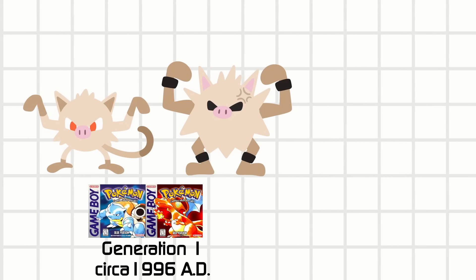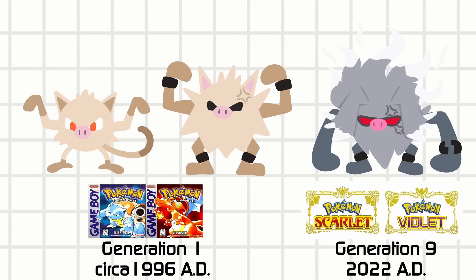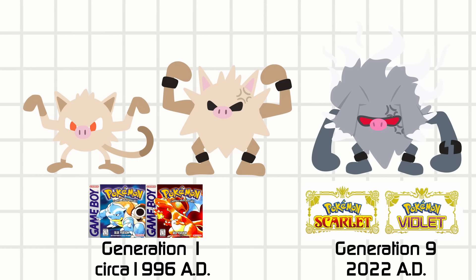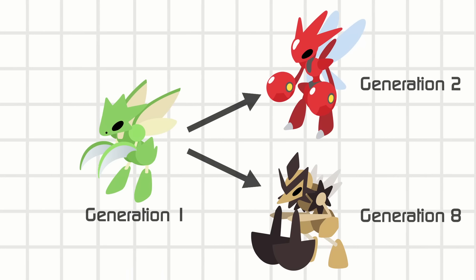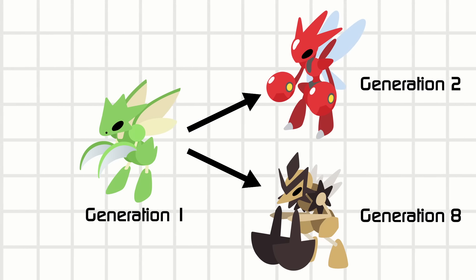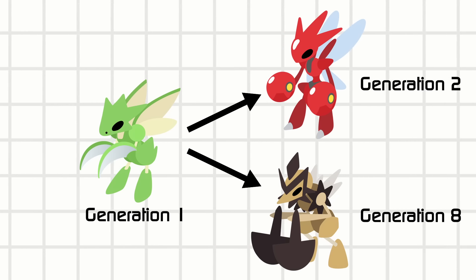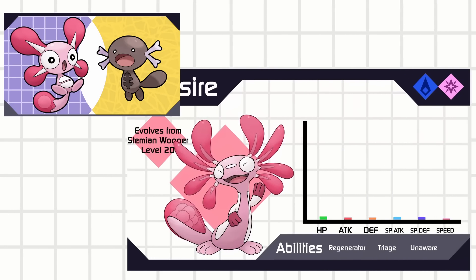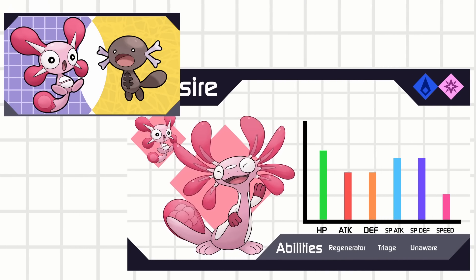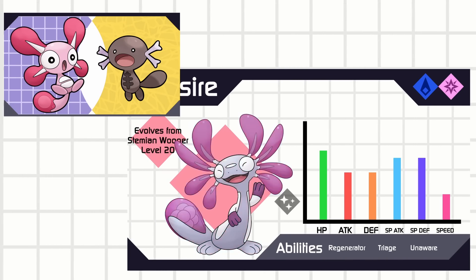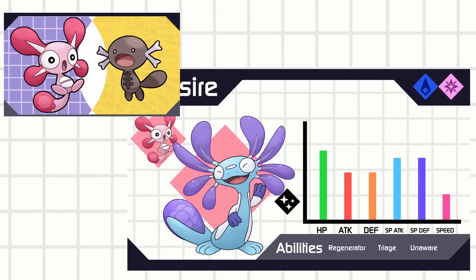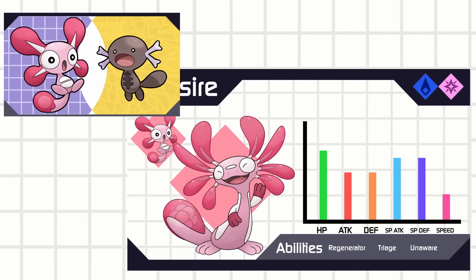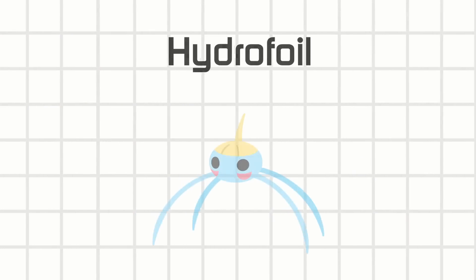Sometimes in Pokemon a new version would reference an older line by giving it a new evolution, or a different evolution that branches away from the older one. In this video I'll cover two lines where I gave them a branching evolution and one last one which is a wholly new addition. I may not use these designs for my stem project, but I might reuse some of these concepts in a different design down the road. Let's start with a new evolution of Surskit.